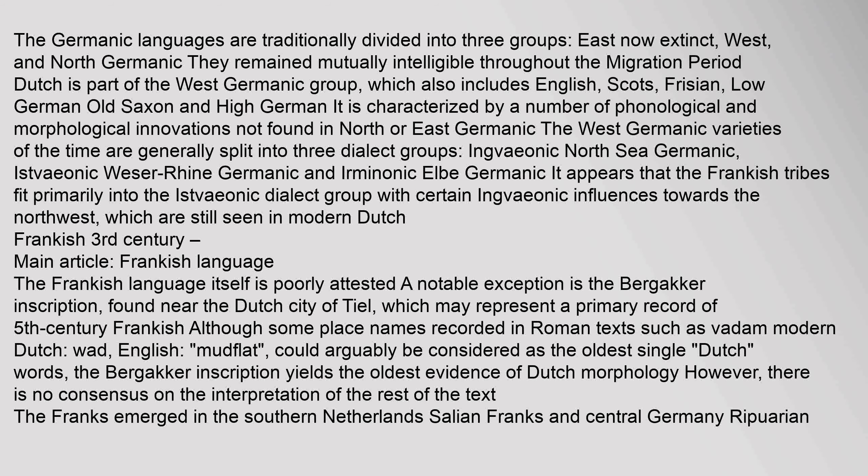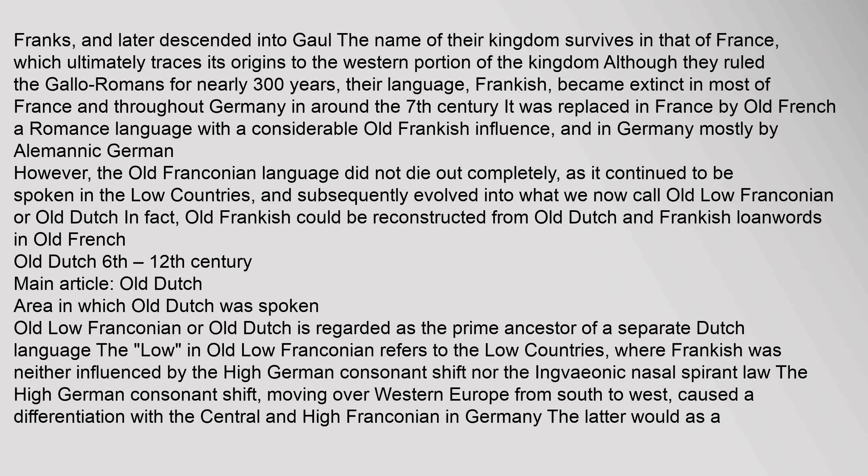The Frankish language itself is poorly attested. A notable exception is the Bergakker inscription, found near the Dutch city of Tiel, which may represent a primary record of 5th century Frankish. Some place names recorded in Roman texts, such as 'Vedam' (Modern Dutch: Wad, English: Mudflat), could arguably be considered the oldest single words. The Bergakker inscription yields the oldest evidence of Dutch morphology, though there is no consensus on the interpretation of the rest of the text. The Franks emerged in the southern Netherlands (Salian Franks) and central Germany (Ripuarian Franks), and later descended into Gaul.